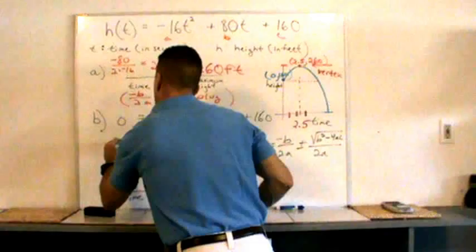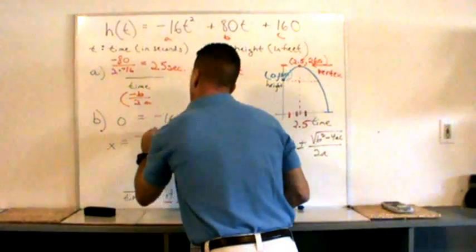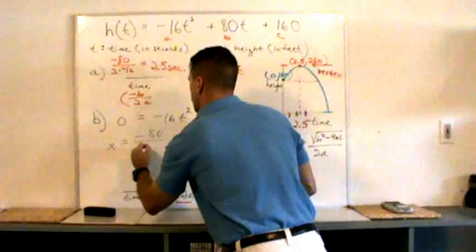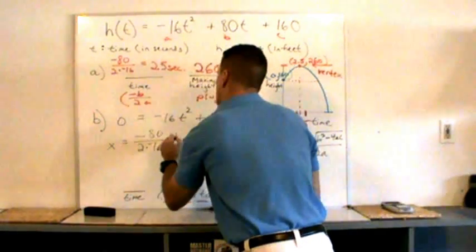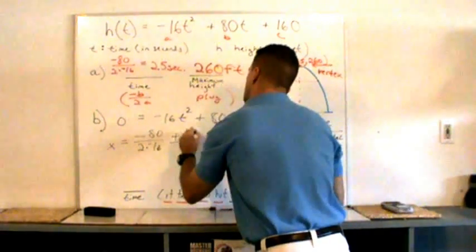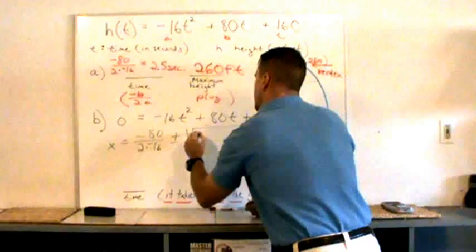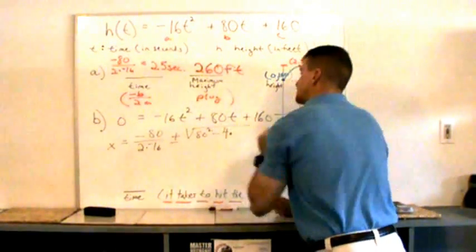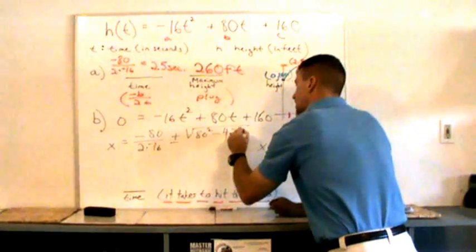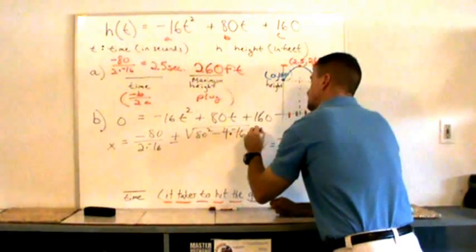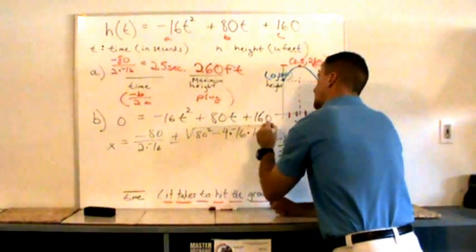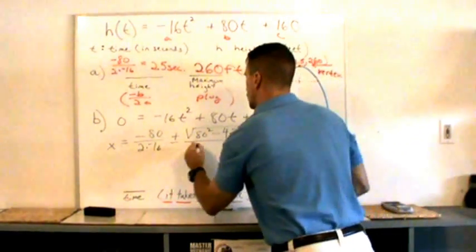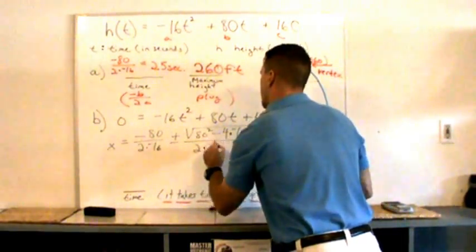So to solve this, x equals negative b over 2 times a plus or minus the square root of b squared minus 4 times a times c. Extend that radical. And that's all over 2 times a.